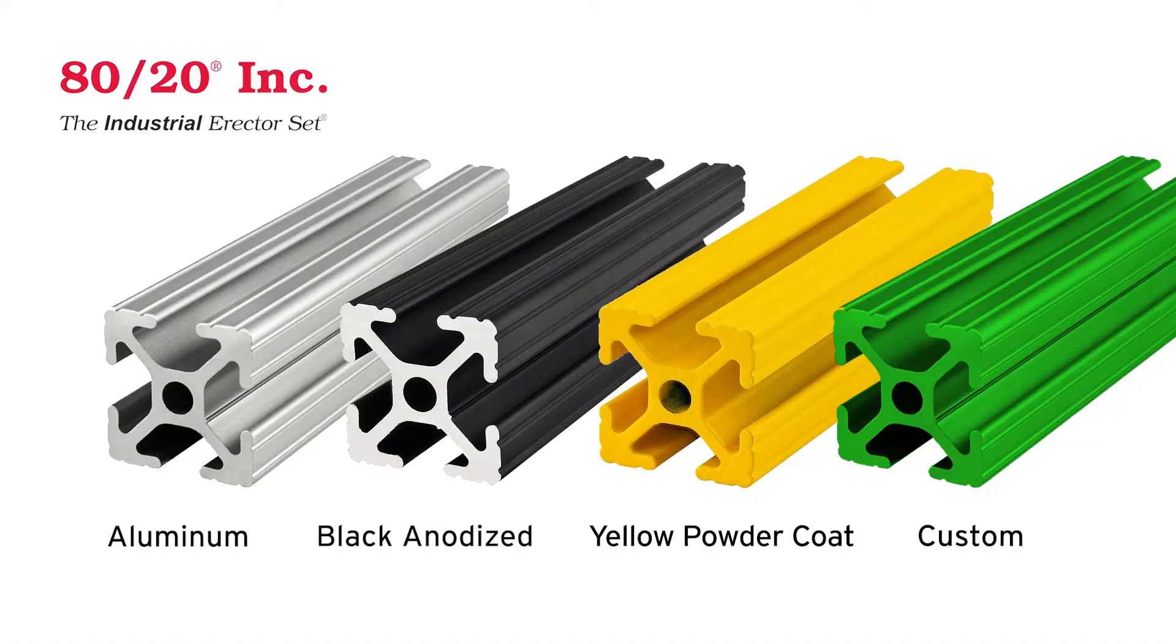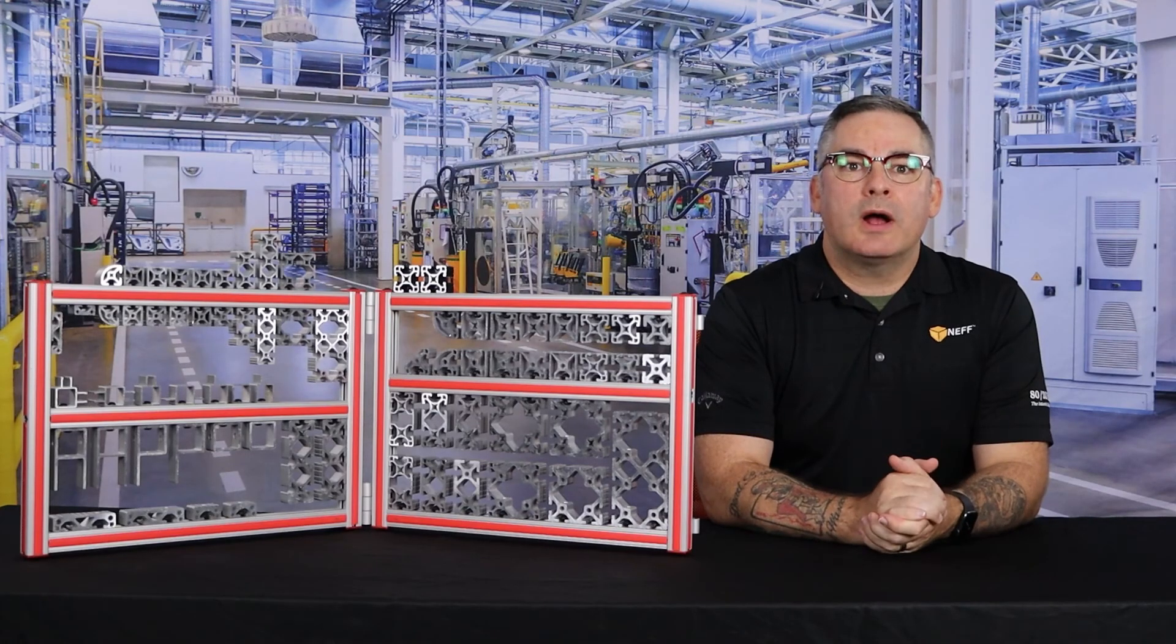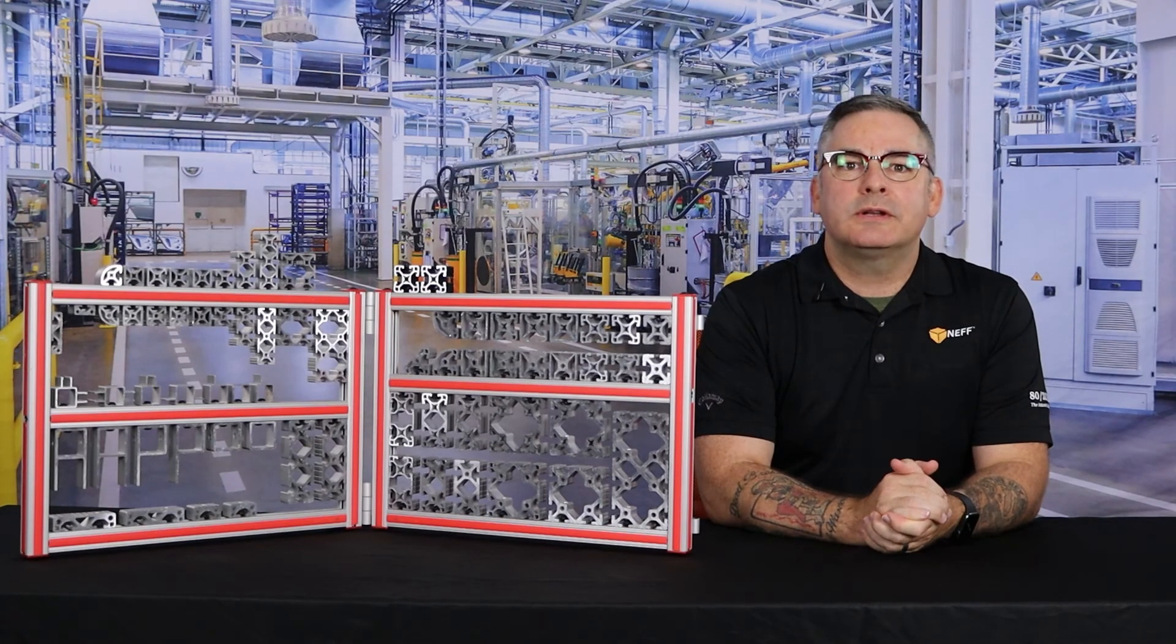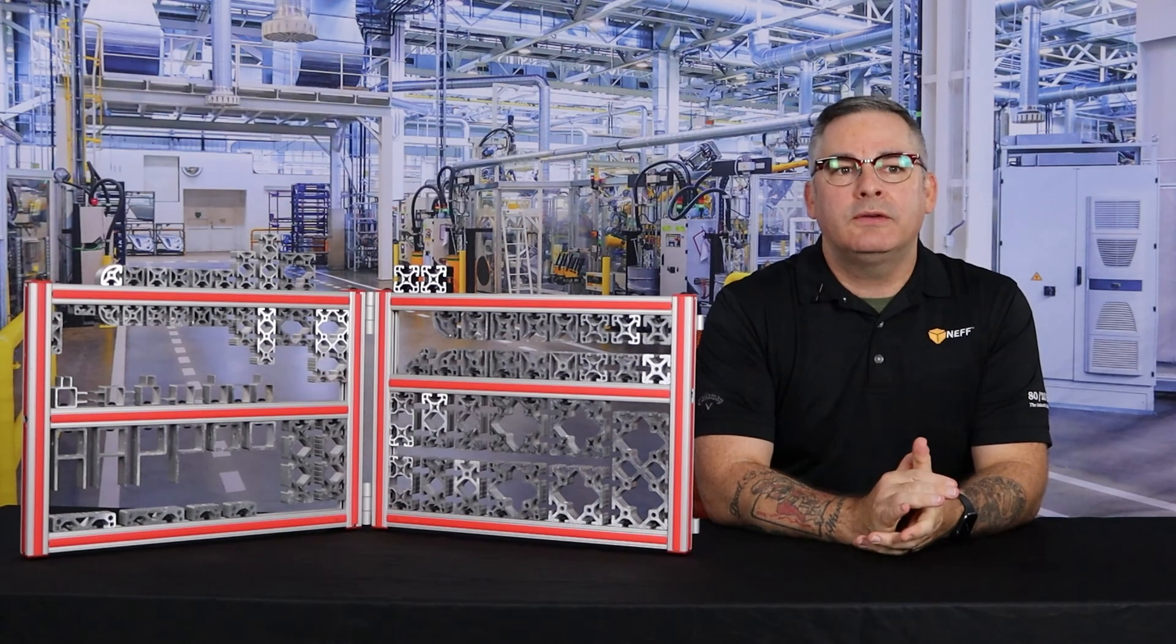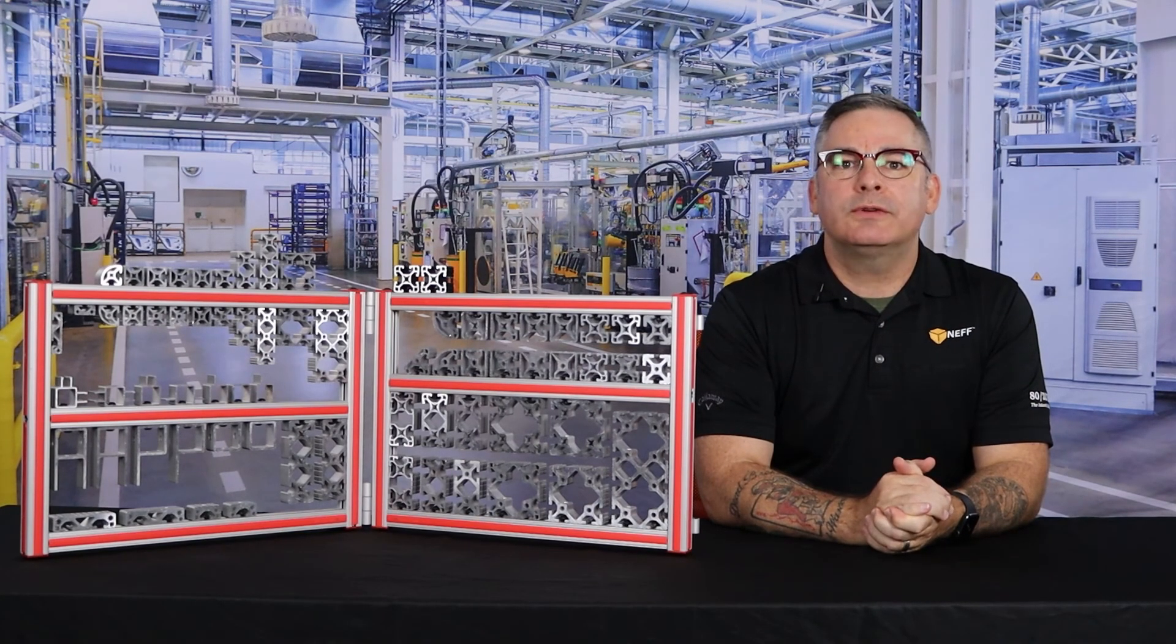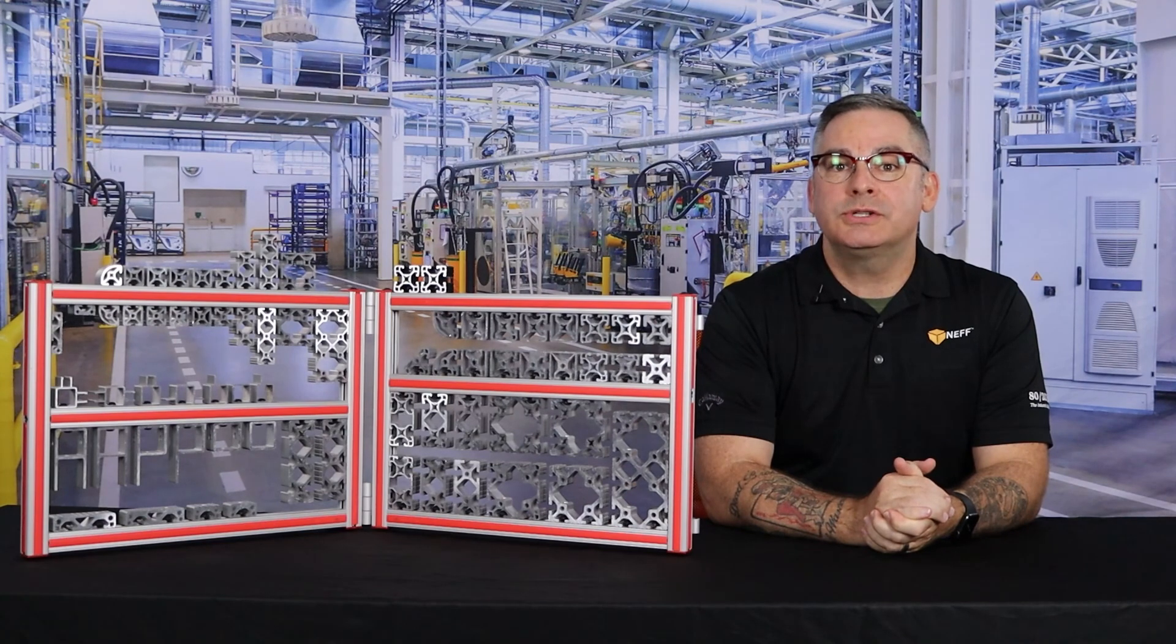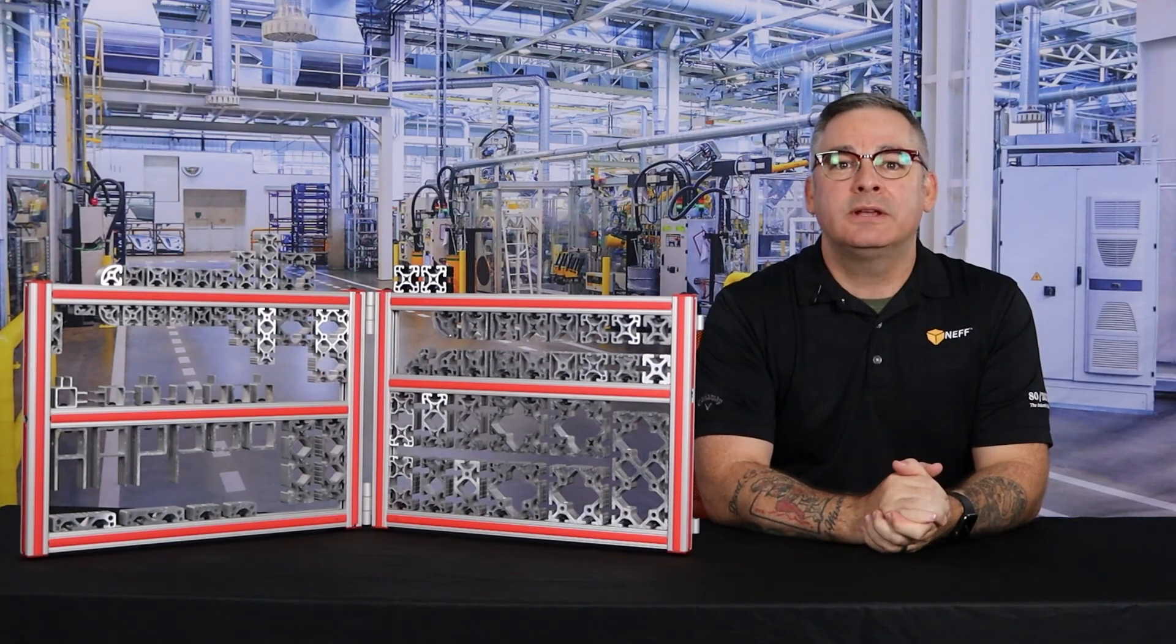These are all available in a black anodized, a safety yellow powder coat, and they will quote custom anodized colors and custom powder coats if you have that RA number available for the code or for the color. Thank you so much for watching, I hope you found this informative and it'll help you in your future projects with 8020. If you have any other questions please feel free to contact your local account manager, your local NEF automation branch, or if you're in my territory contact me. Again thank you very much and have a great day.